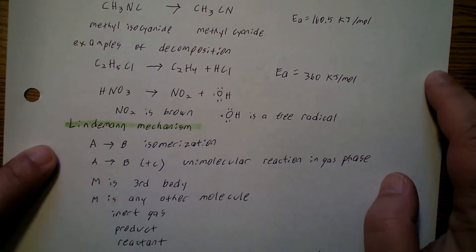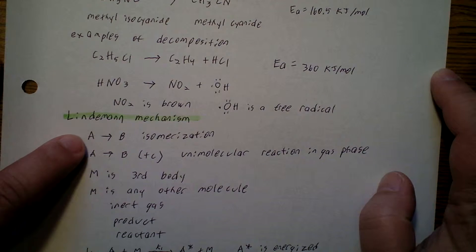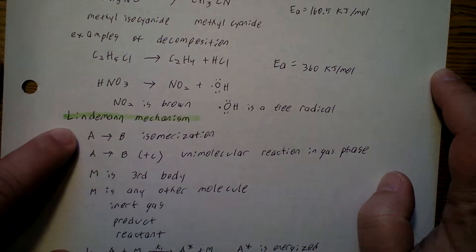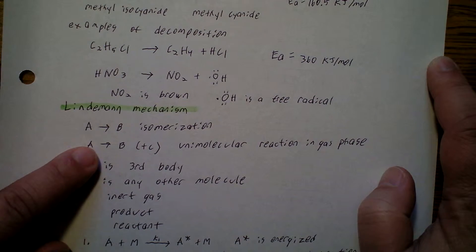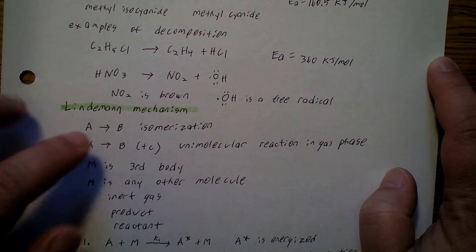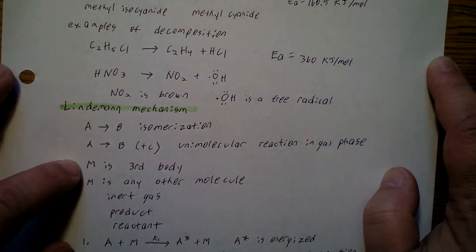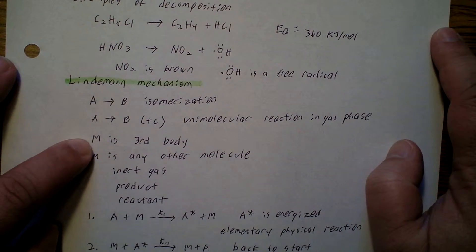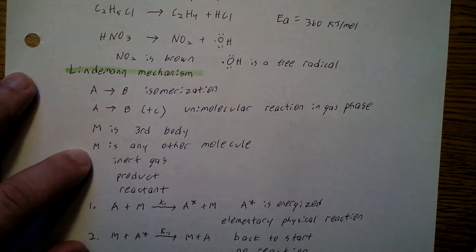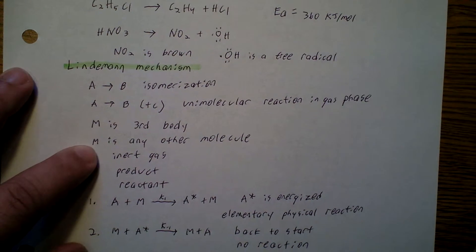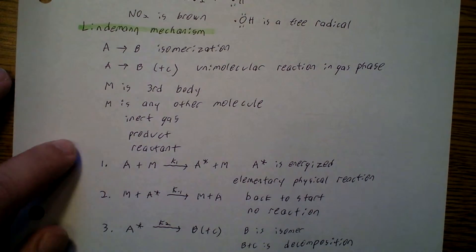So now let's talk about the Lindemann mechanism. Let's say we go A to B in an isomerization. So we have A going to B, or also C, etc. They can be a unimolecular reaction in the gas phase. And then we're going to say M is just any third body — M can be any other molecule. It can be an inert gas, it can be a product, reactant, it doesn't matter, as long as it can store energy.